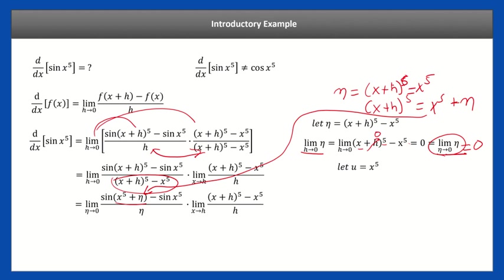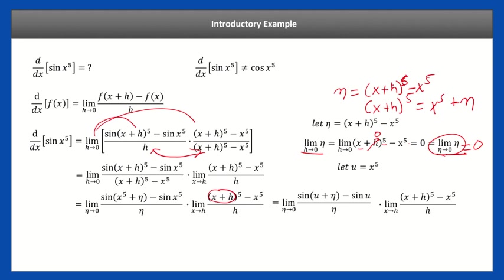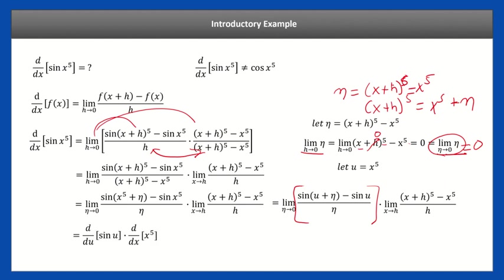Now let u equal x to the fifth. We're going to replace anything that's x to the fifth with u. So those get replaced, and now it looks simpler. This part is the limit, and like I said earlier, this is the derivative of x to the fifth power. So again, this gets replaced with the derivative of x to the fifth power right here.